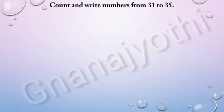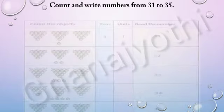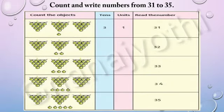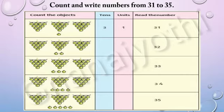Now, let us count and write numbers from 31 to 35 by looking at this picture. Look at the first row — in the first row, there are 31 grapes. Let us write number 31 in its place. Look at the second row — in the second row, there are 32 grapes. Let us write the number 32 in its place.